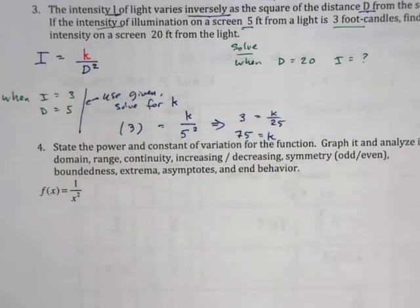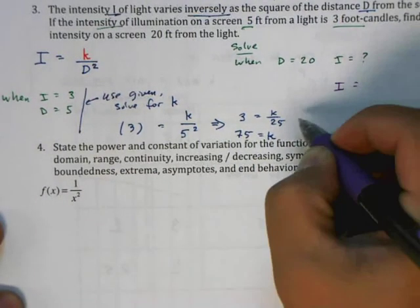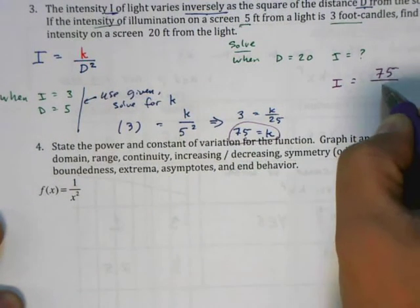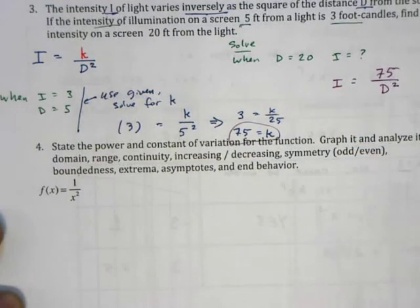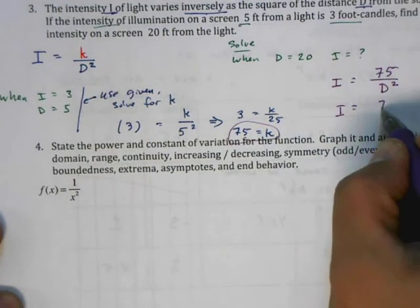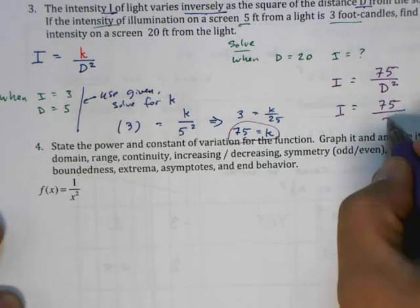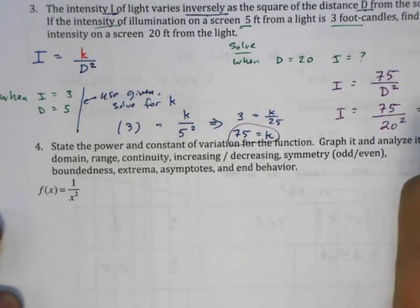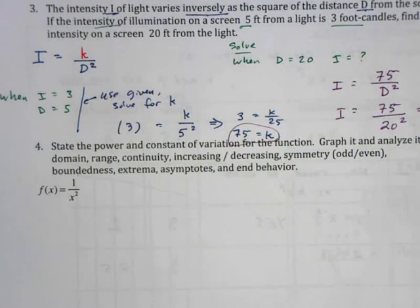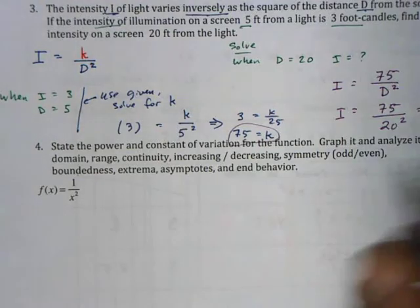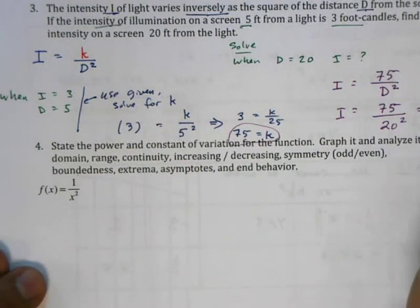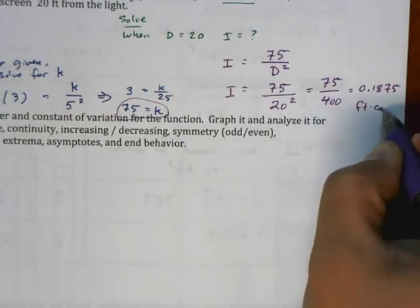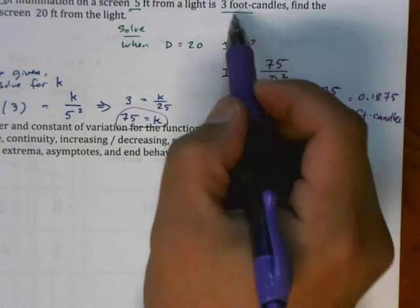Now we can use this known k to solve for this scenario. I know that I equals k over D squared, but I know that k is 75 and D is 20. This is a pretty straightforward computation: 75 divided by 400, which is exactly 0.1875. Our units here are foot-candles, which is a highly unusual unit.